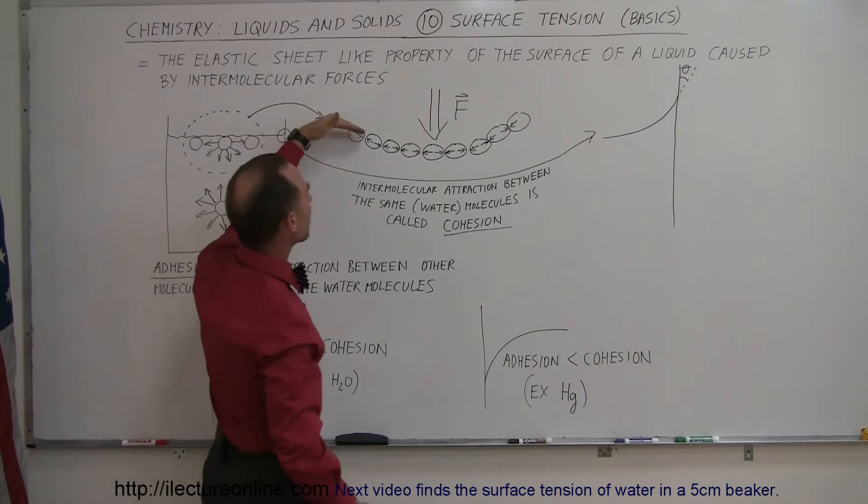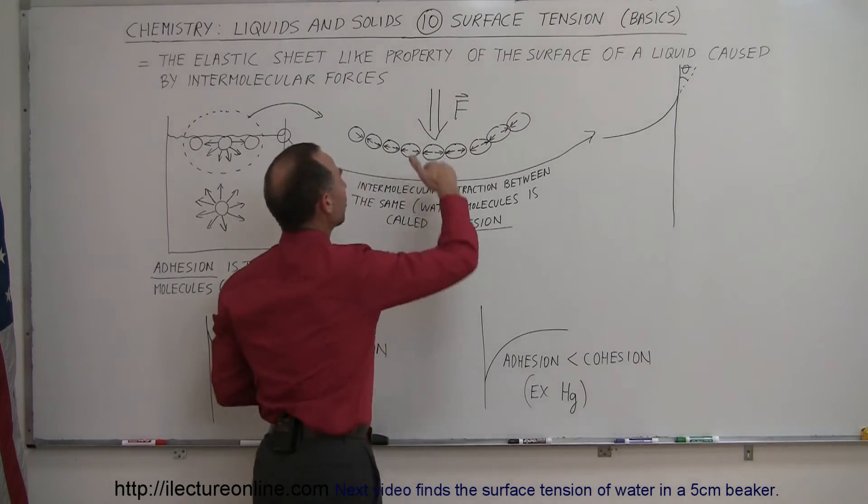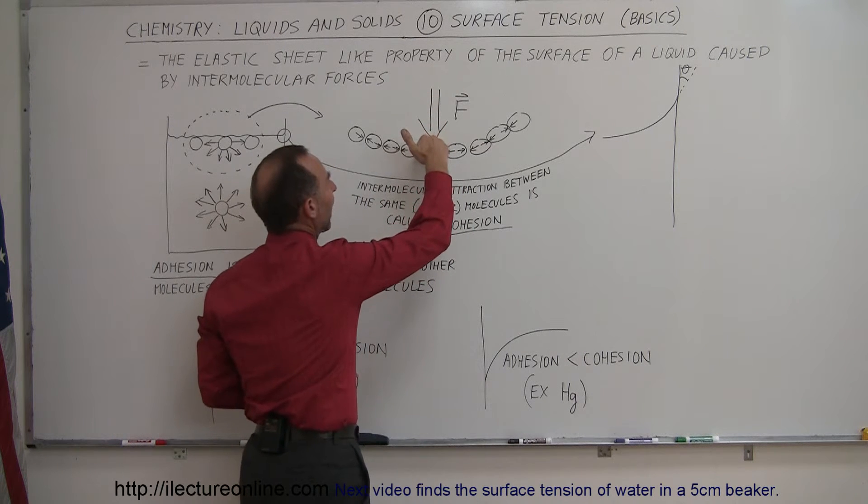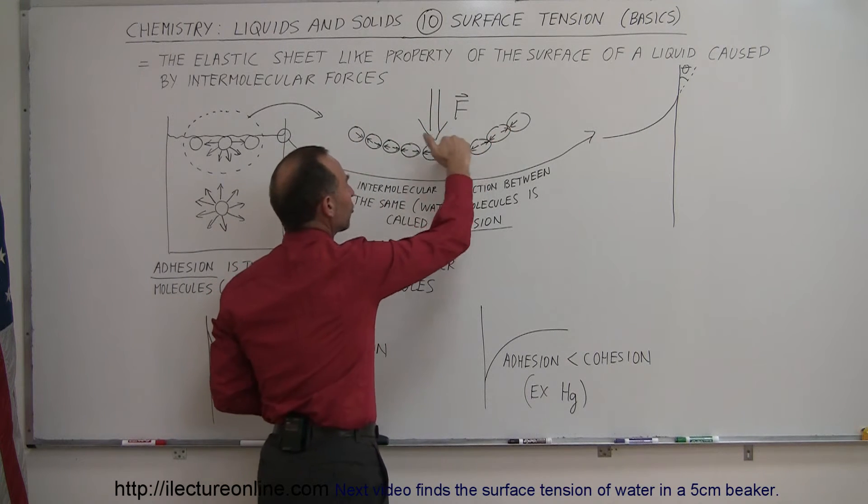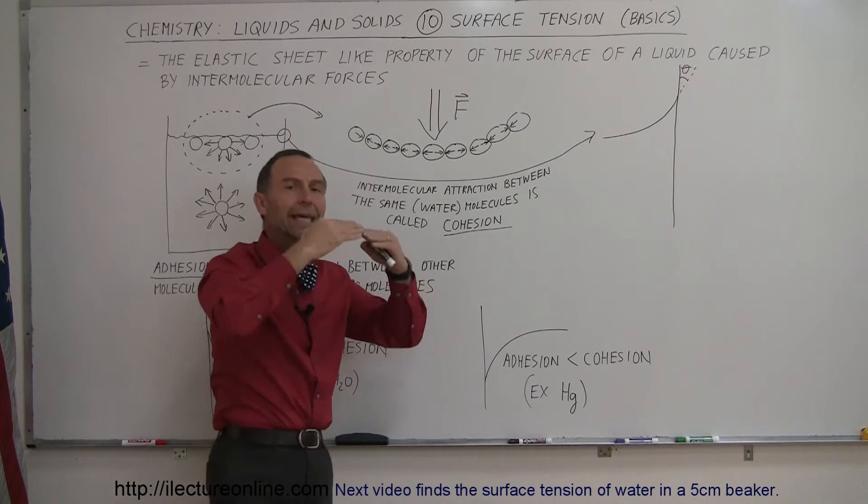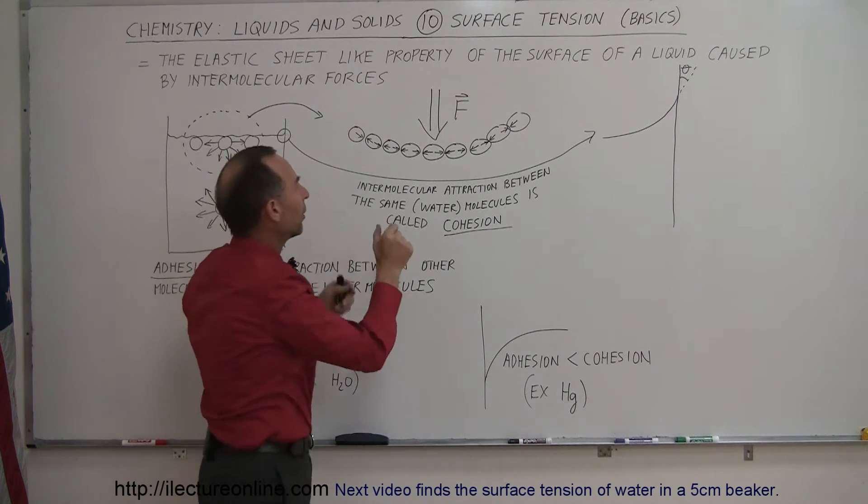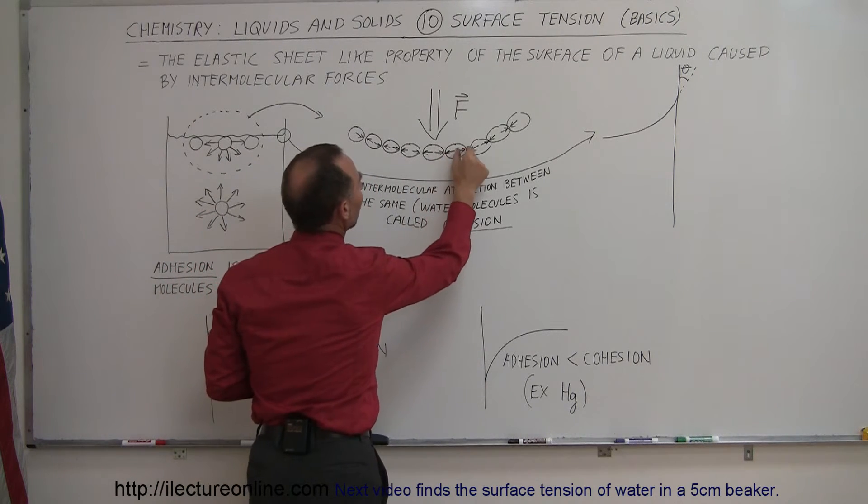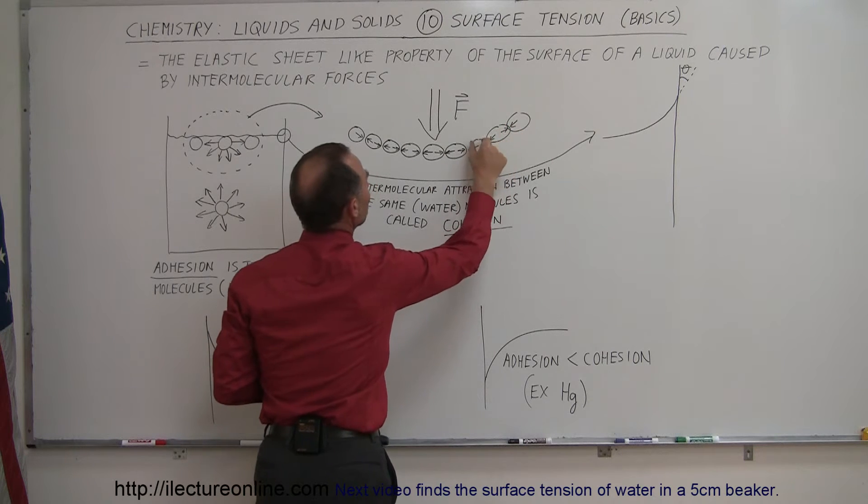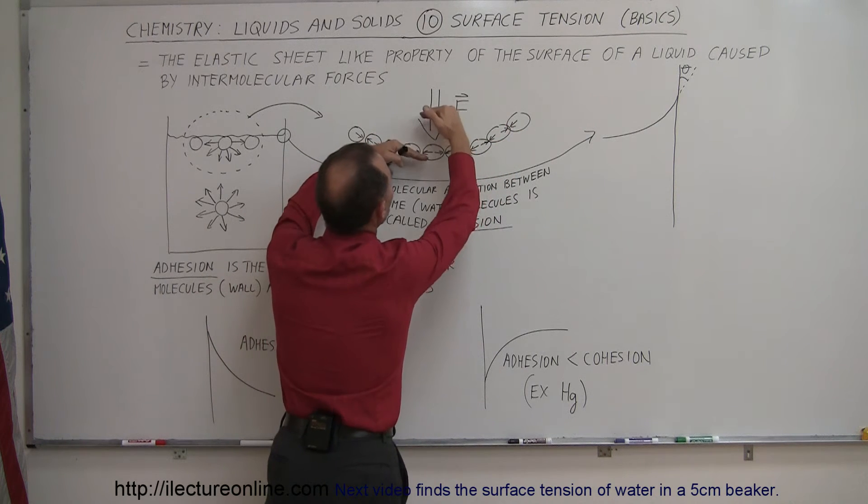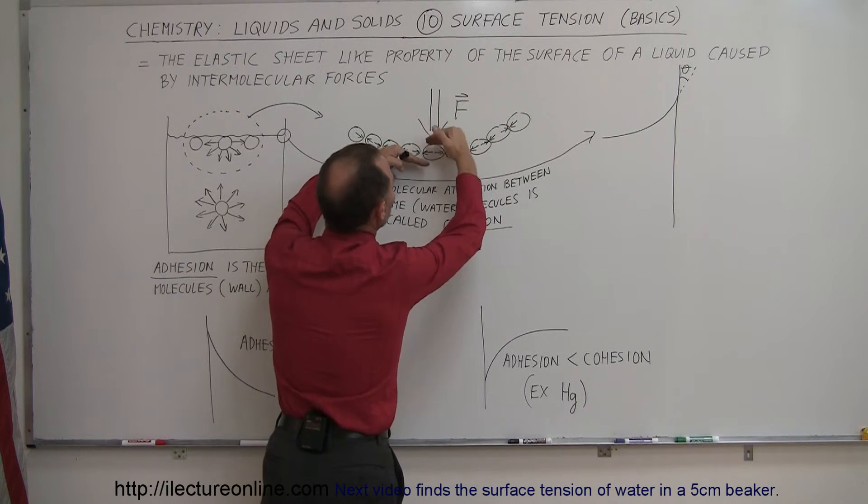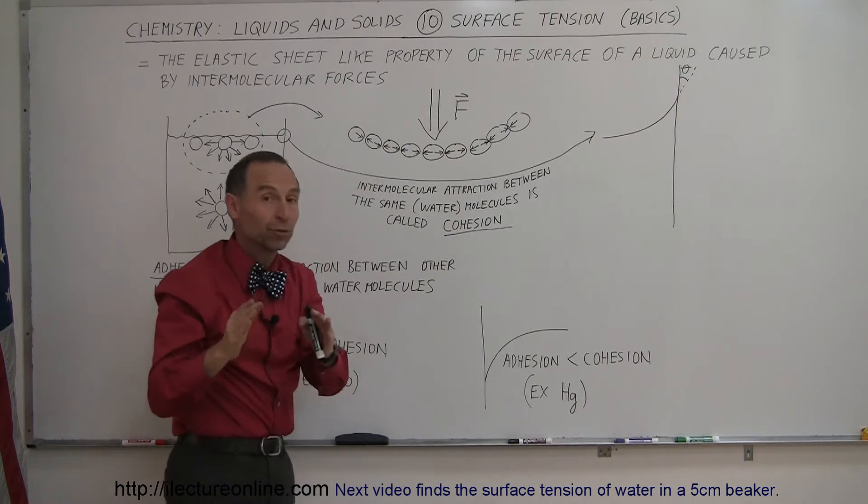If we imagine these to be the molecules at the surface and you push down on the molecules, you get a solid sheet-like property, almost like a hanging cable, where the forces that cause these molecules to be attracted to each other prevent the object from breaking through the surface, as long as you don't push too hard.